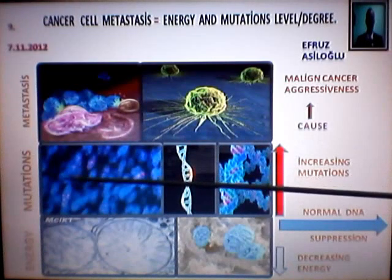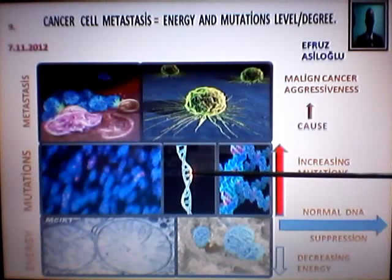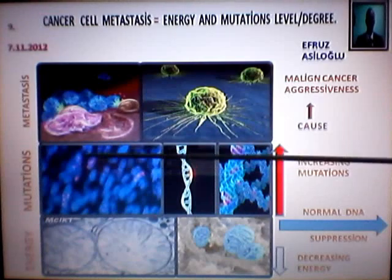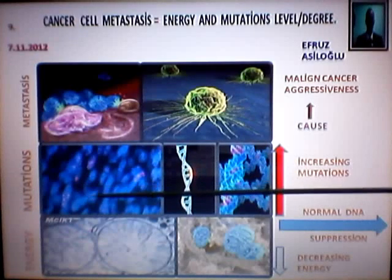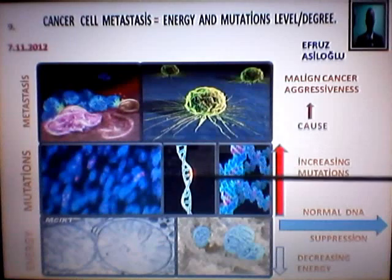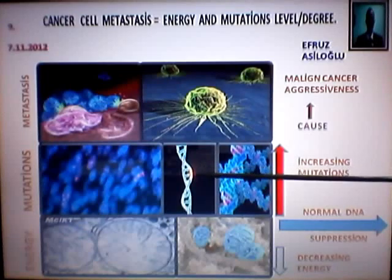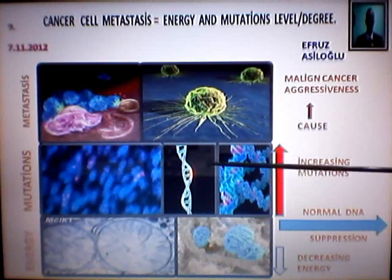These pictures show us mutations inside of DNA. These chromosomal aberrations, and these are DNA double helical — a flash of mutations.